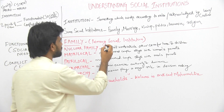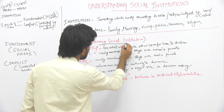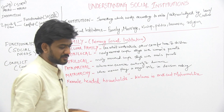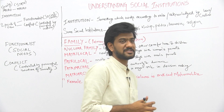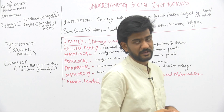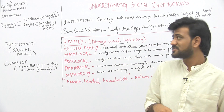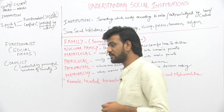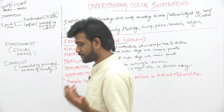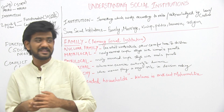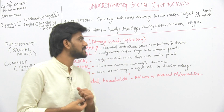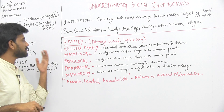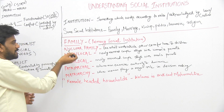Family is often termed as a primary social institution because a child first takes place in the family, and that's a major source of learning for that child. When we talk about family, there are two kinds of family.